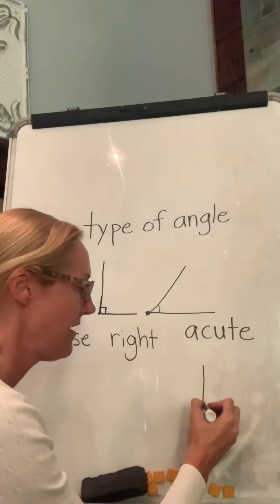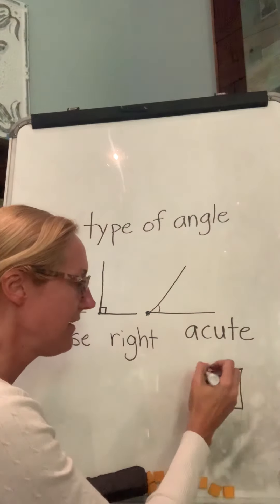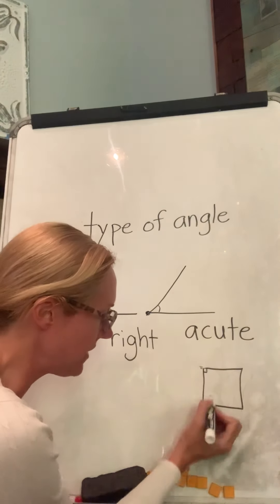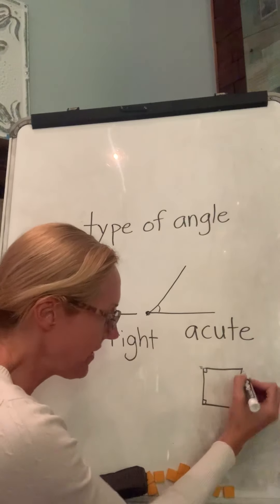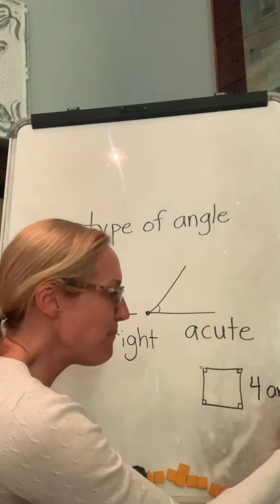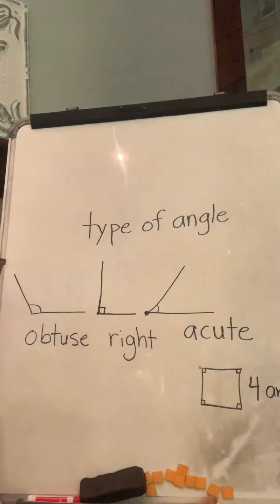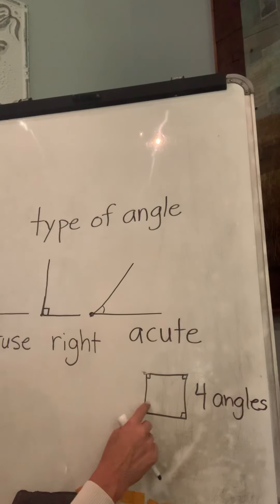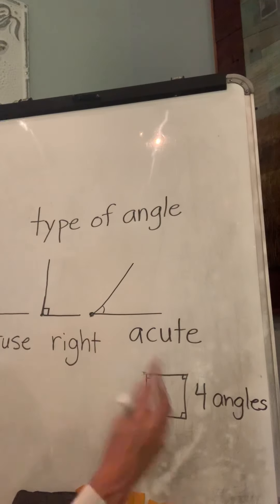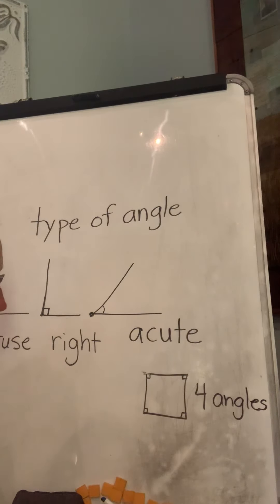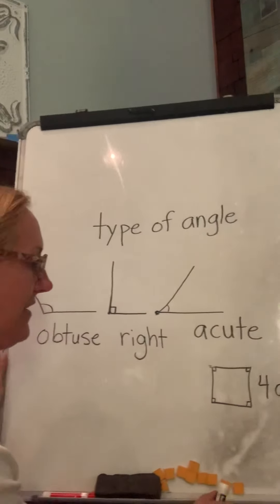For instance, if we have a square, how many angles does a square have? Here's an angle — one, two, three, four. So it has four angles. What type of angles are they? They make perfect little squares, so a square has four right angles.